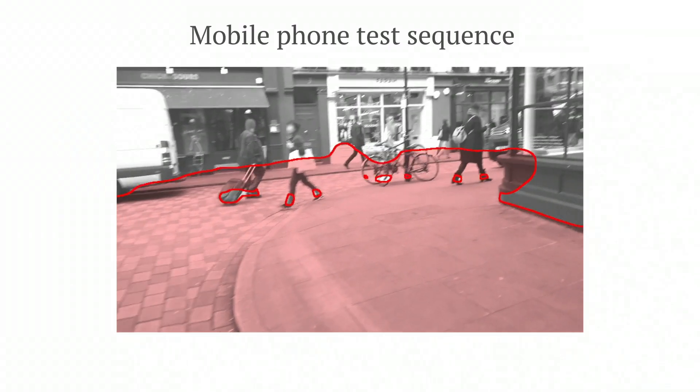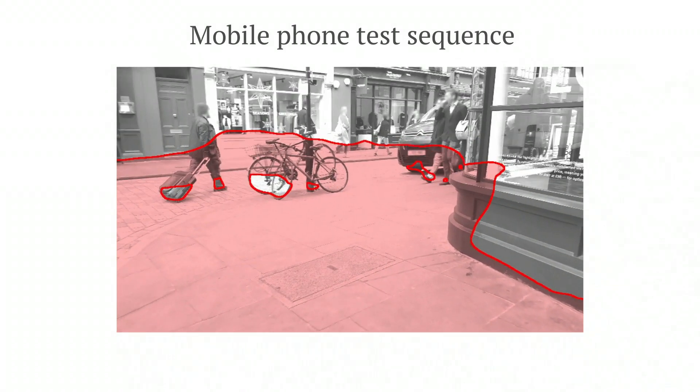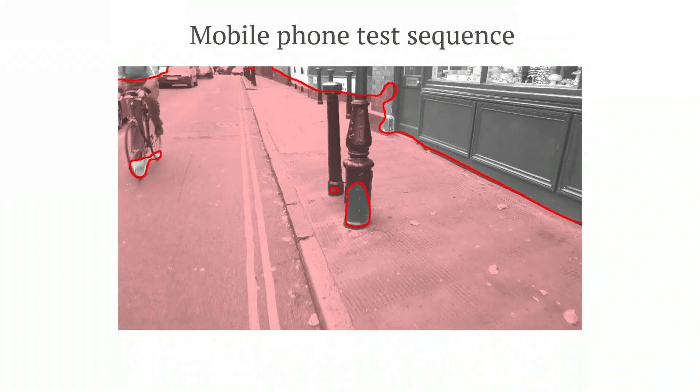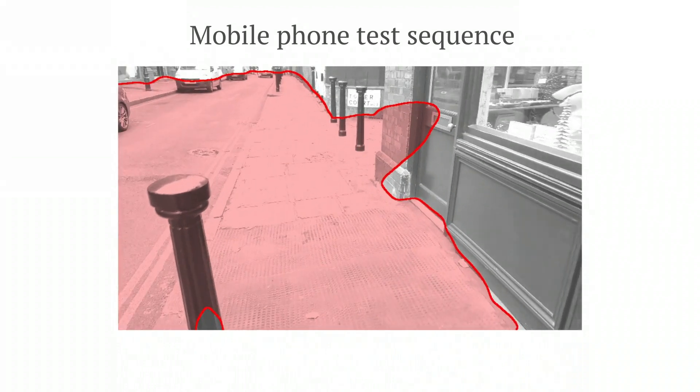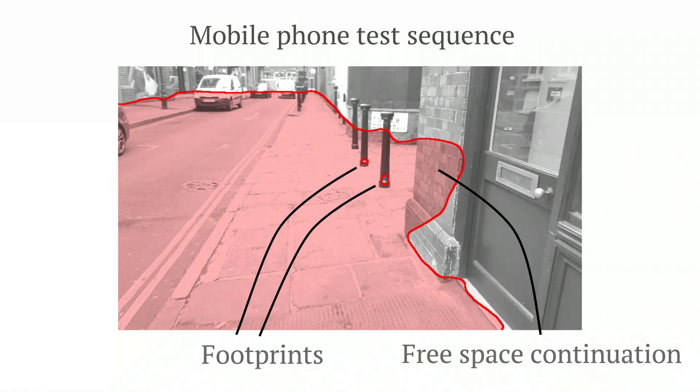Here, we show predictions from our model trained on our own handheld stereo dataset. These test sequences were recorded on a different day to the training data, filmed on a mobile phone. Again, we see how our model predicts object footprints, and also free space. Here, estimating the continuation of the footpath around a corner.